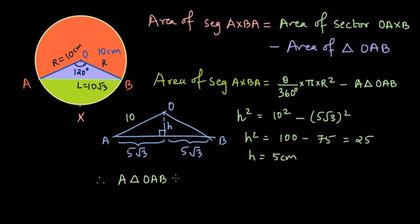And from here, we can find the area of the triangle OAB as half times base of the triangle, which is 10 root 3 times the height, which is 5. And this gives us 25 root 3 square centimeters. Let us quickly write this value for the area of the triangle OAB. That is 25 root 3 square centimeters.